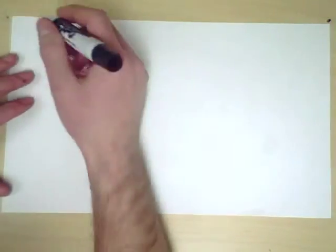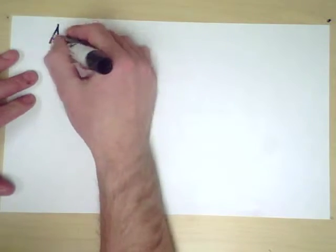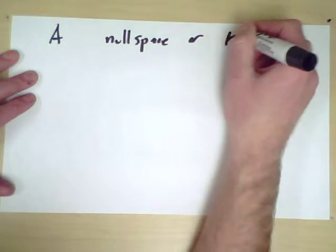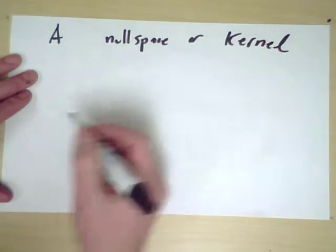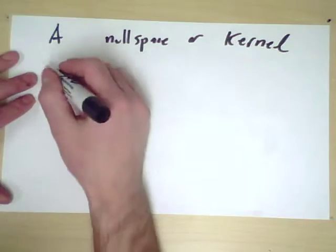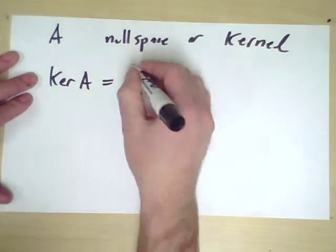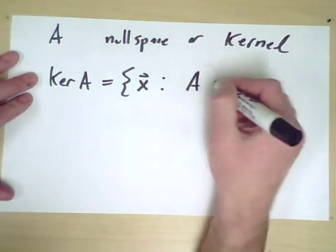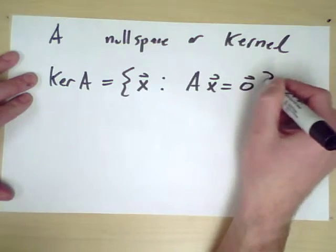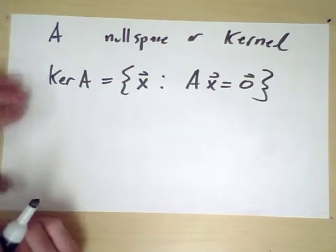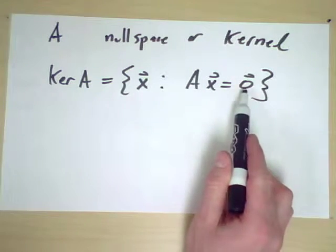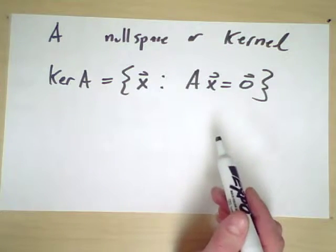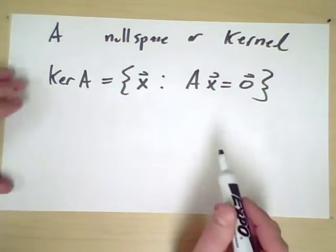The other key idea for a matrix A is the idea of a null space, or kernel. So the kernel of A are the inputs x such that Ax equals 0. So often we think about this as what are the inputs that give the output 0, if I think about A as being a function or being a map.